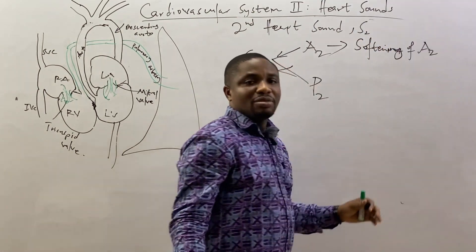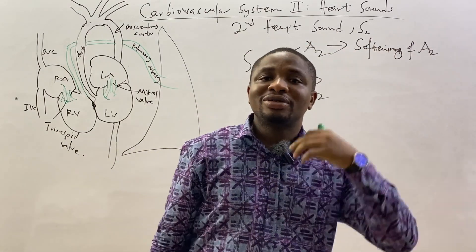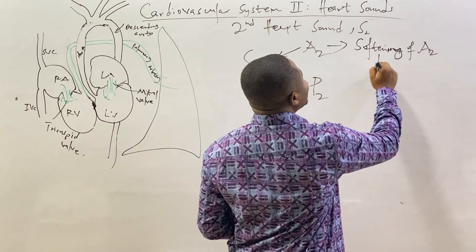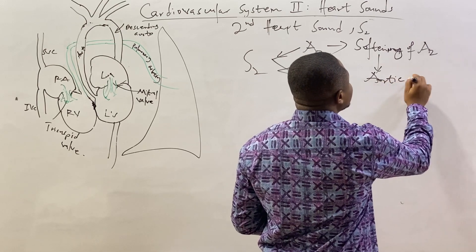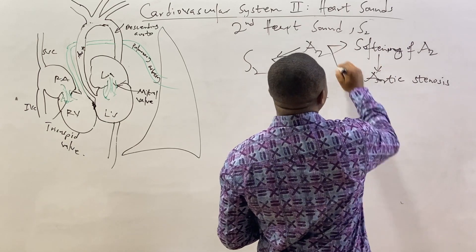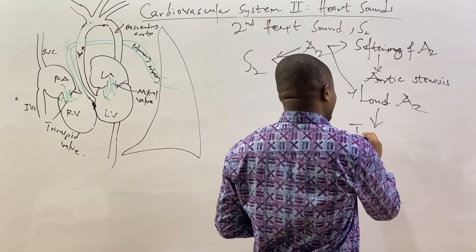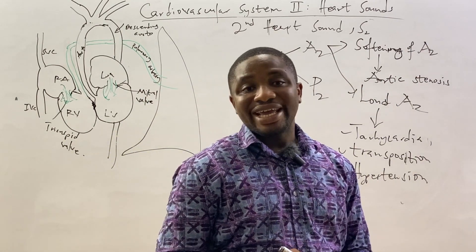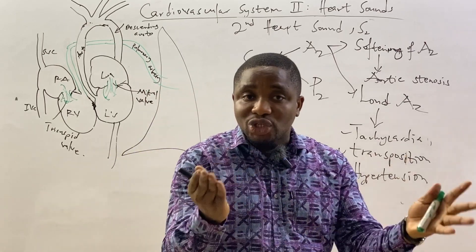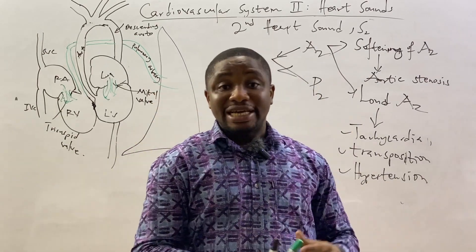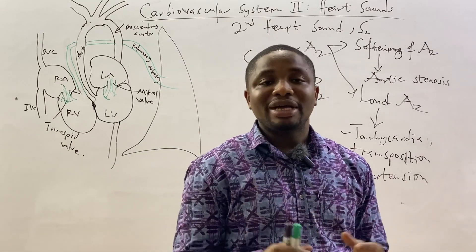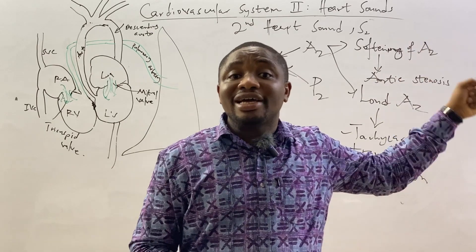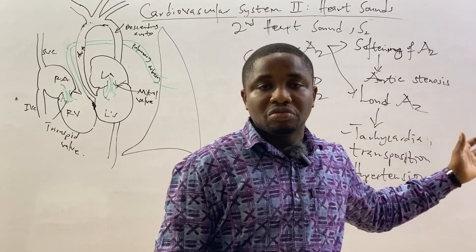The most important abnormality of the A2 component of the second heart sound is softening of A2, which occurs in aortic stenosis. When does A2 become loud? You can think of TTH: tachycardia, transposition (transposition of the great arteries), and hypertension. Remember that the most important abnormality of the A2 is softening, caused by aortic stenosis. For a loud A2, think TTH — tachycardia, transposition of the great arteries, and hypertension.